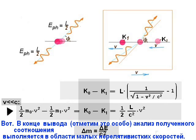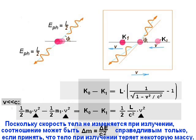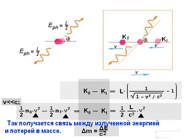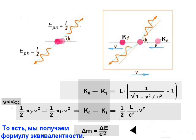Well, at the end of derivation, the analysis of the obtained relationship is performed in the region of low non-relativistic velocities. As the body does not change its velocity at the emission, the relationship may be true only if we assume that the body loses some mass during the emission. So, the relationship between the emitted energy and the mass loss is obtained. That is, we have the equivalence formula.